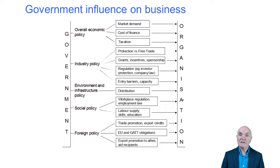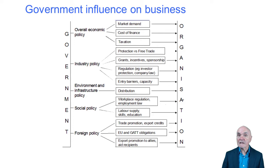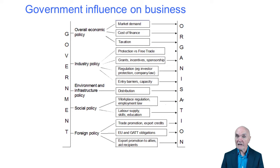The government can try to encourage certain areas by giving grants — for example, to set up high-tech industries, or to get companies to set up in areas with high unemployment. Regulation also matters: how easy is it to set up a business? In the UK it's pretty easy — you just register with Companies House. Sometimes the government will limit the number of businesses of a particular sort, for example saying there are enough television channels and no new ones will be allowed.